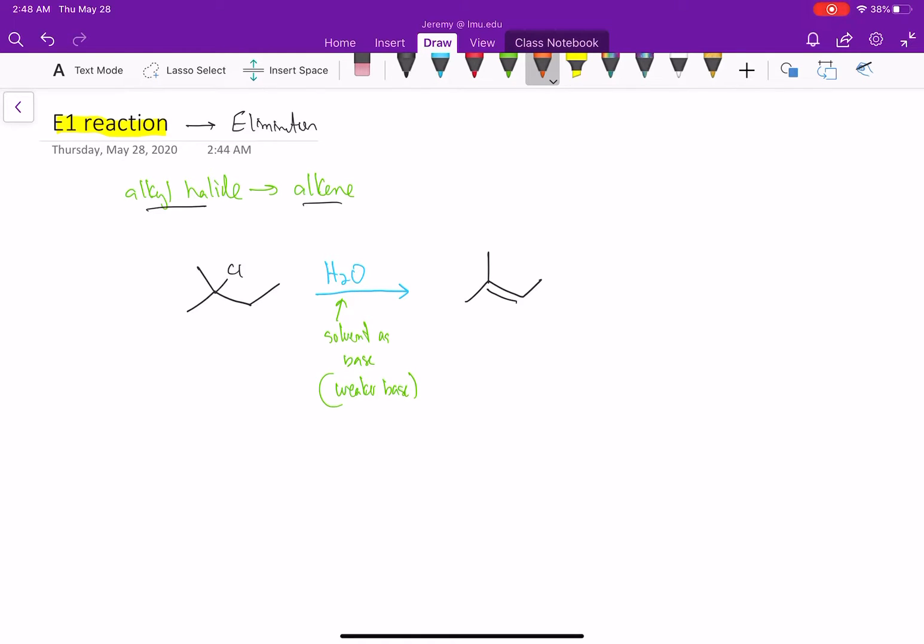So in the E2 reaction, we saw that that was a one-step mechanism in second order. Here we're going to see that the E1 reaction is going to be multiple steps, but it's going to be first order. So let's look at the difference in the mechanism.